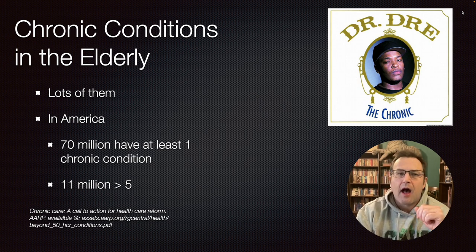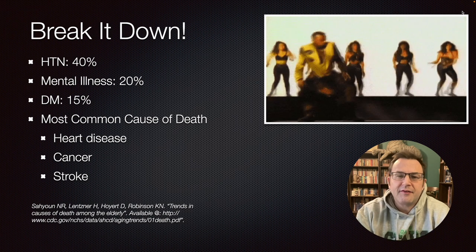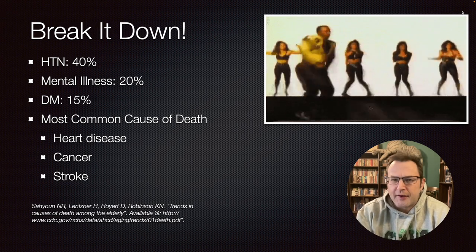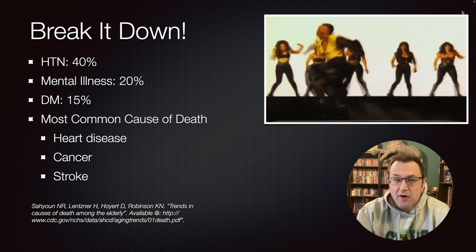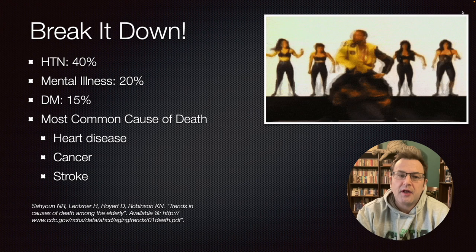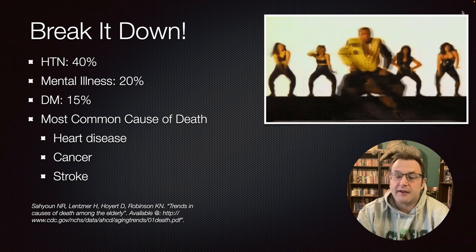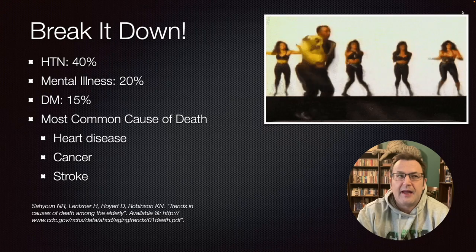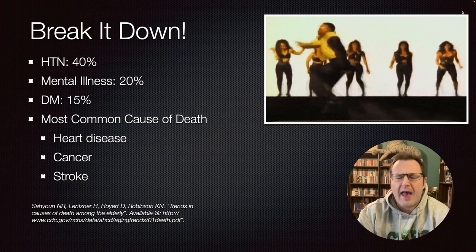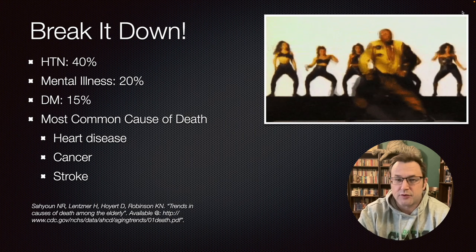I couldn't get hard data on that — it does reflect my own personal experience, but at least 11 million people do have five or more. If you take out arthritis — because in a gerontology setting, just about everybody's got arthritis — 40% of the population presents with hypertension, 20% with mental illness, and 15% with diabetes. The most common causes of death in elderly patients are heart disease, cancer, and stroke, which honestly reflects the general population as well, except for young men where accidents are most common up until the early to mid-20s.